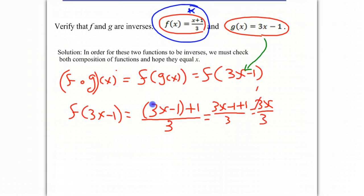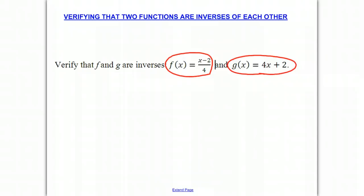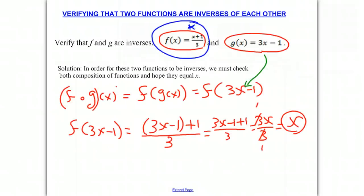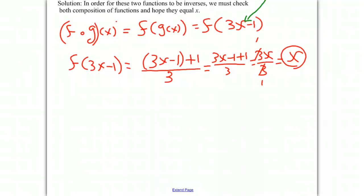The 3s cancel out, and we get x, which is what we had hoped for. It is true that f composed with g of x gives us x, which means these two functions have undone each other — exactly what we want inverses to do. Please pause the screencast now, go back to your original problem, finish these final steps, and see if you also get x.